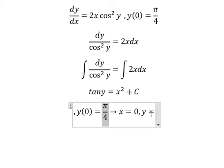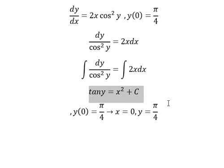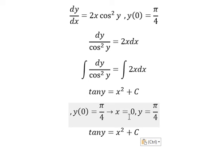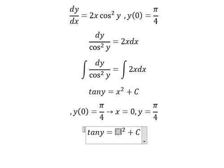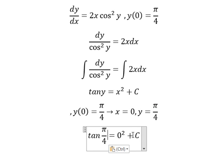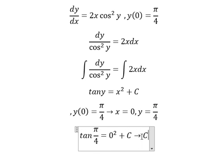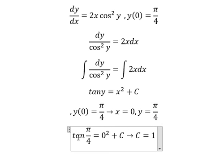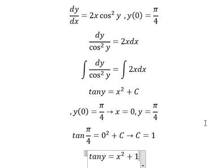So I will put 0 here, π over 4 here, and now we simplify and we have C equals to 1 because tan of π over 4 equals 1. And now we put 1 here and that is the final answer. This is the end, thank you for watching.